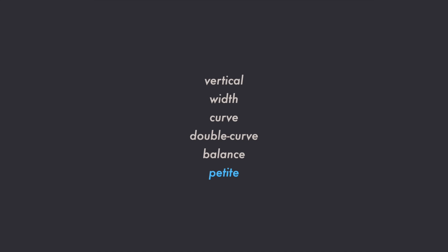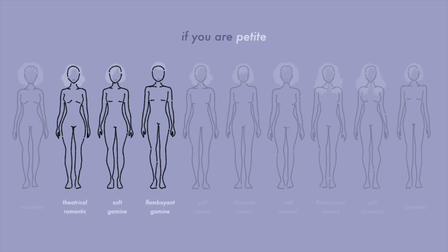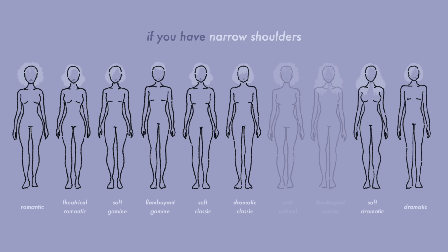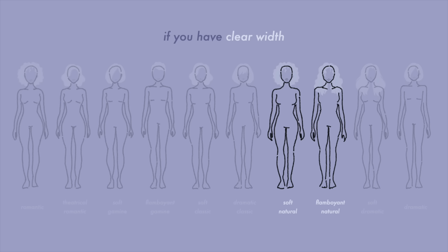Process of elimination. Now that you have your line drawing and an initial assessment of your shapes and lines, let's clear the board by eliminating some body types. Petite: if you know you aren't petite, eliminate theatrical romantic, soft gamine, and flamboyant gamine. If you're very confident that you're petite, then you are one of these three body types. Width: if your shoulders are clearly not wider than your hips, eliminate flamboyant natural and soft natural. If your shoulders are wider than your hips, you may be dramatic, flamboyant natural, soft natural, dramatic classic, or flamboyant gamine. However, if you are very confident that you have to accommodate width in your shoulders in your clothing selections, then you're either flamboyant natural or soft natural.